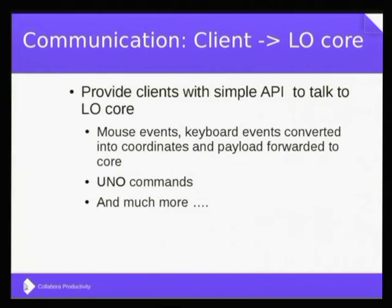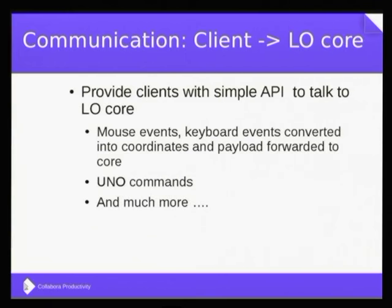The first communication is between the client and LOCore — it just uses the API to talk to LOCore. Mouse events and keyboard events are converted into document coordinates and along with the payload they are forwarded to the core, which is running in headless mode behind the scenes. It intercepts these events, makes changes, and then interacts with the client. The communication between client and LOCore is through the API, and the core also interacts with the client through a mechanism we will see in the next slides.